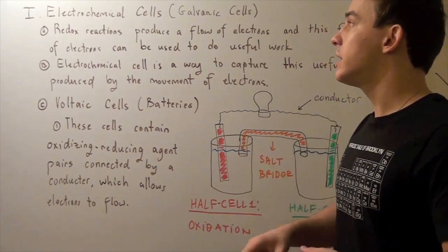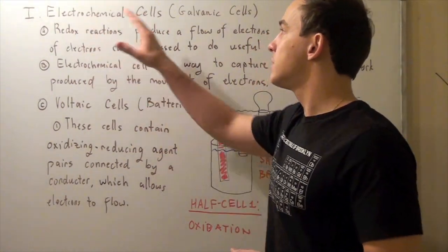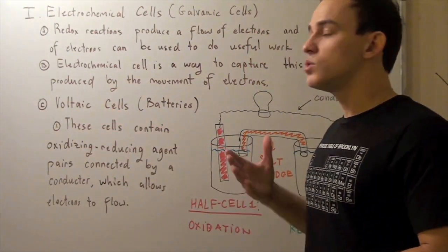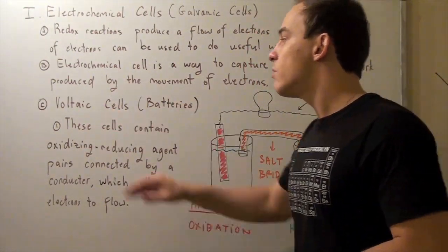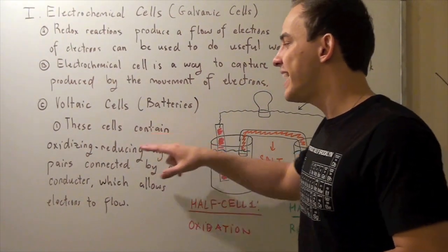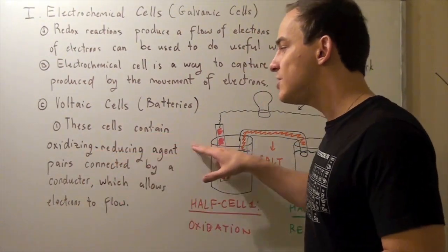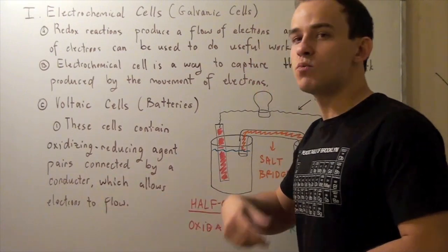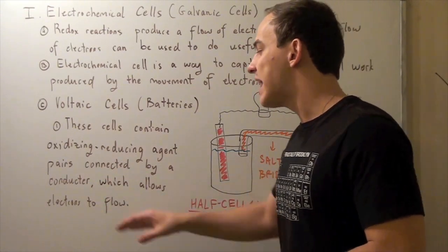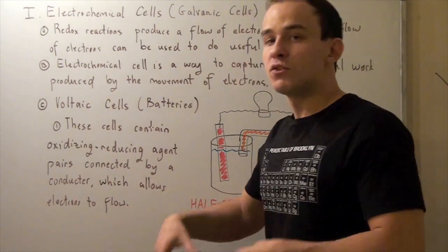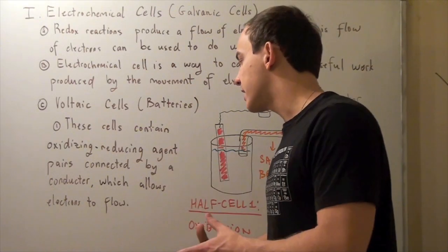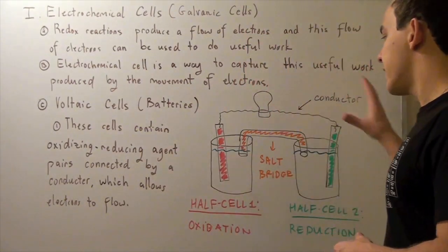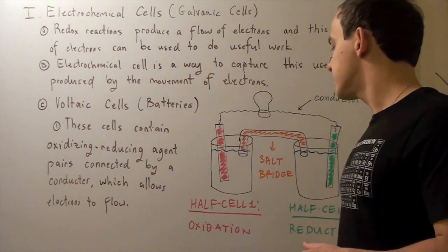We're going to talk about special types of electrochemical cells called voltaic cells, also known as batteries. These types of cells contain oxidizing-reducing agent pairs connected by a conductor, such as a wire. And this conductor allows electrons to flow from one atom to a second atom. Now let's look at a layout of a voltaic cell.